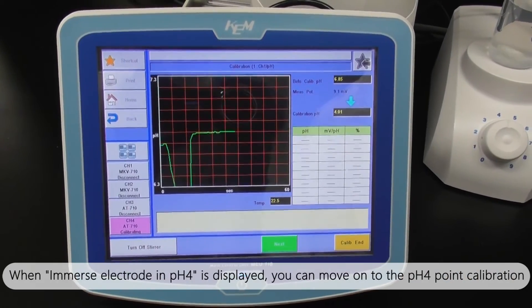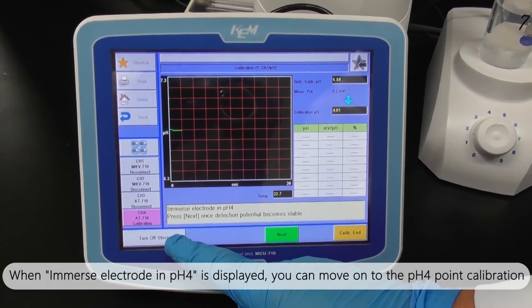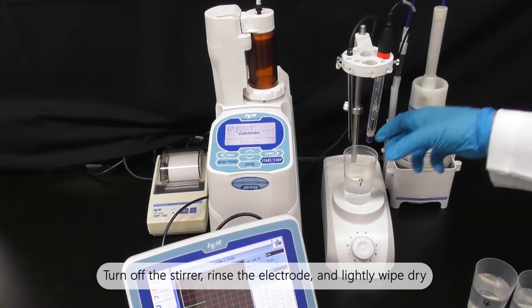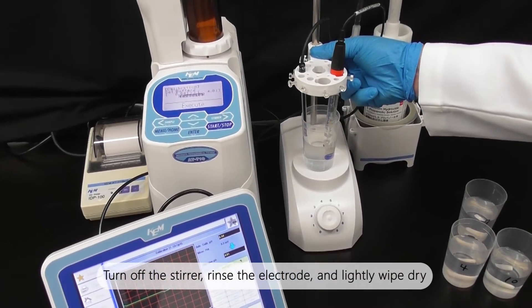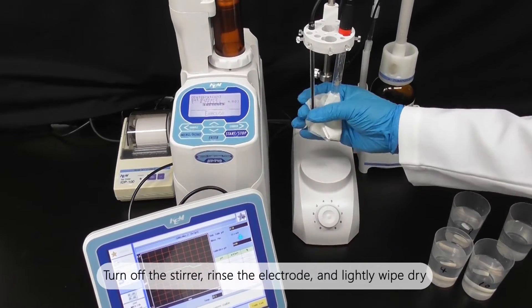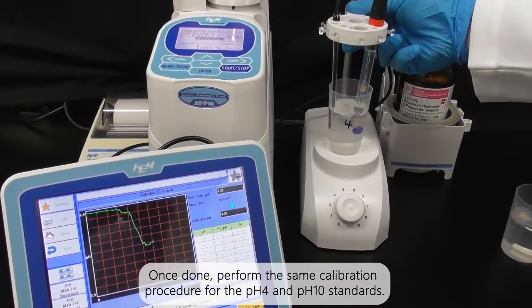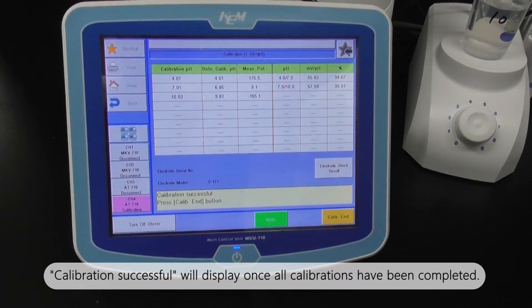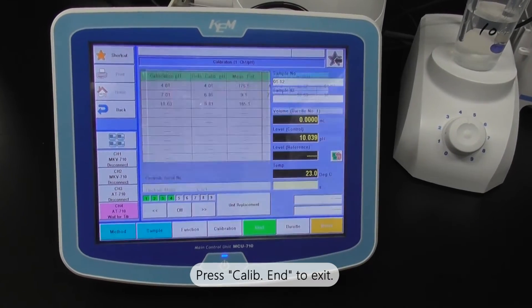When immerse electrode in pH 4 is displayed, you can move on to the pH 4 point calibration. Turn off the stirrer, rinse the electrode and lightly wipe dry. Once done, perform the same calibration procedure for the pH 4 and pH 10 standards. Calibration successful will display once all calibrations have been completed. Press calib end to exit.